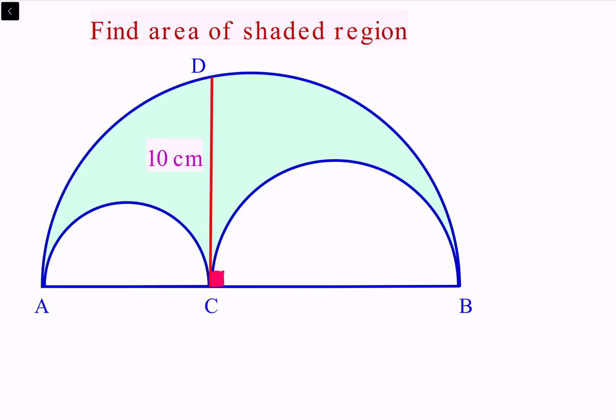AC is the diameter of the smaller circle. Let's assume this length is A units. BC is the diameter of the bigger circle. Let's assume this is B units. The diameter of the biggest circle, AB, will be A plus B units.